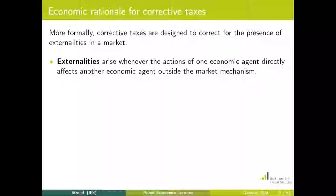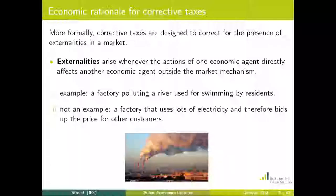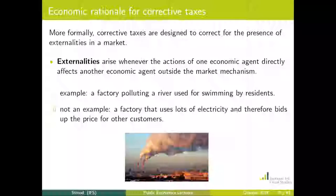The economic rationale for corrective taxation is to correct for externalities. An externality arises in a market whenever one economic agent's actions affect another agent in a way that is outside the market mechanism — in a way the first agent doesn't have to take account of when deciding how much to consume or produce. For example, a factory polluting a river where local residents swim: when deciding how much to pollute, the factory considers only its production profit, not the effect on local swimmers — that's an externality. By contrast, a factory bidding up electricity prices for other local factories is an effect controlled by the price mechanism, so that is not an externality.